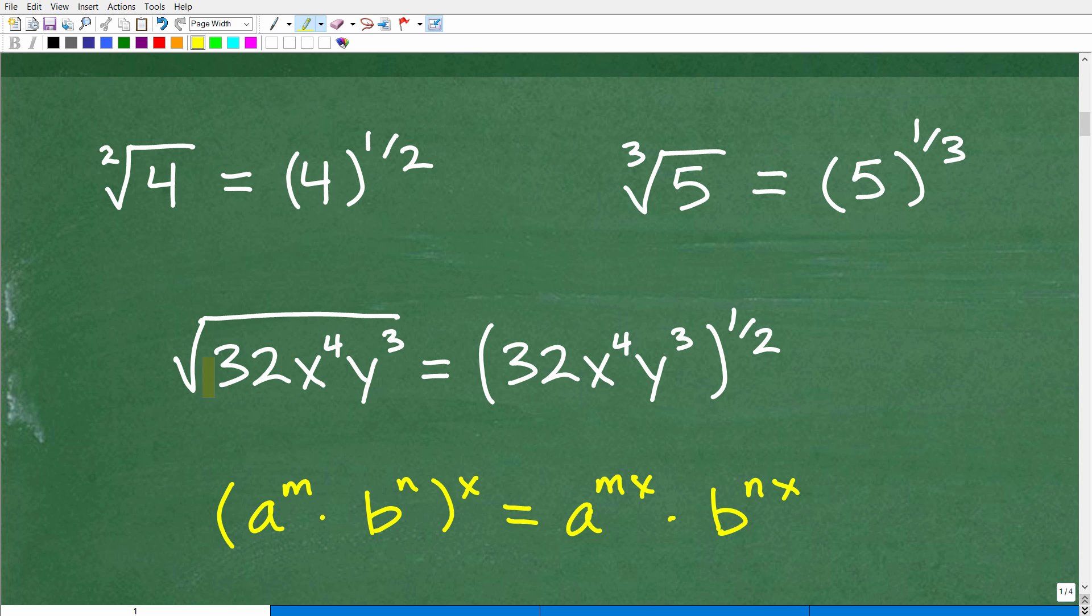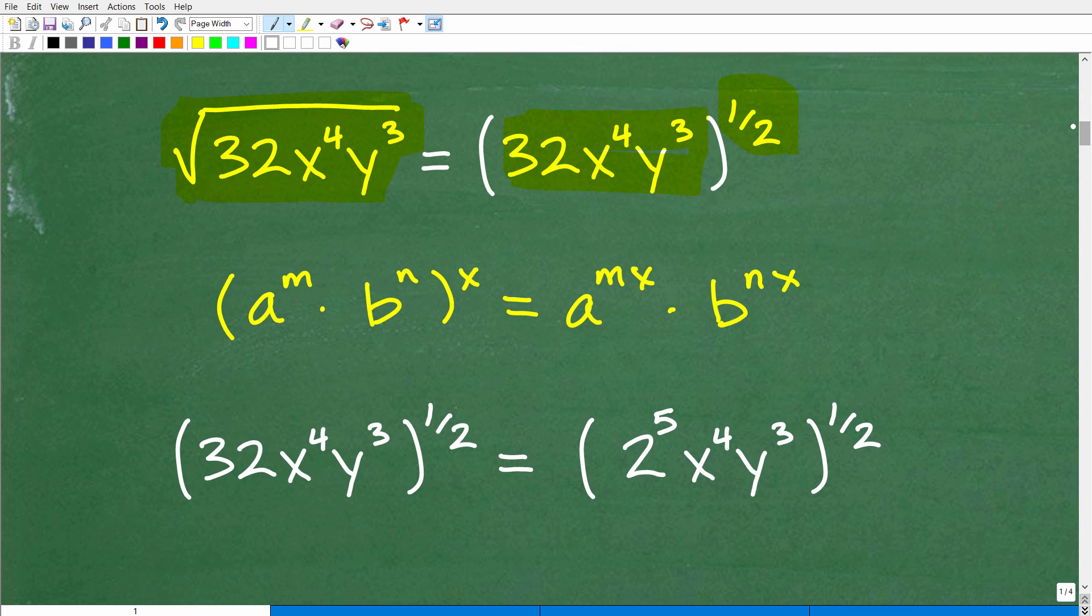But we're going to use this concept to solve this particular problem. Now, again, you could just break these up into individual square roots, but I'm going to go this path because you need to know rational exponents. Okay, so let's go ahead and take a look at our problem. We have the square root of 32 times x to the 4th times y cubed. Let's go ahead and rewrite this problem as 32 x to the 4th y to the cube, all to the 1 half power. Okay, so I'm going to use rational exponents here to simplify this expression. Okay, so before we get going, there's a couple rules. There's a few different things that you need to know about properties of powers and exponents.